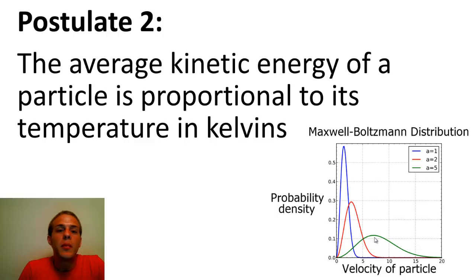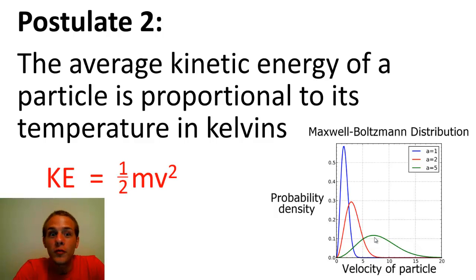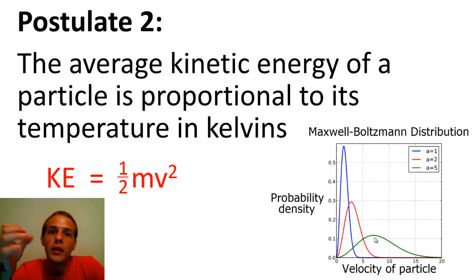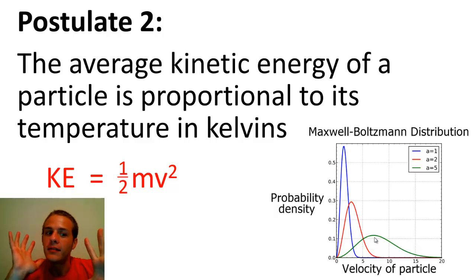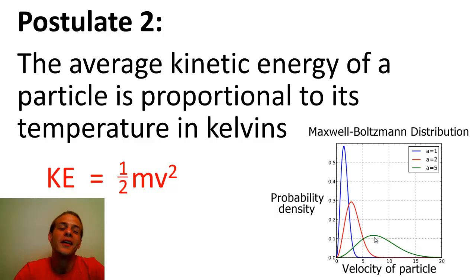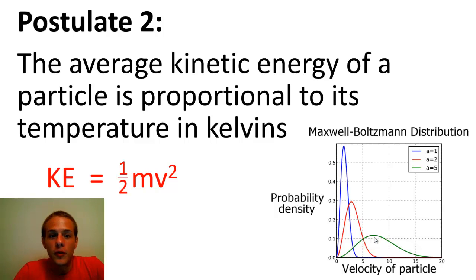That average speed is related to kinetic energy by this equation: kinetic energy equals one-half times the mass times the velocity of the particle squared. So not only does a particle moving fast have a high kinetic energy, but a particle that has a large mass also has a large amount of kinetic energy. If you have two gases at the same temperature, they're not going to have the same velocity if they have different masses. In order for two gases to have the same temperature, the lighter gas particles have to be moving faster. The average energy due to the motion of the particles is directly proportional to the temperature of the particle in Kelvins.